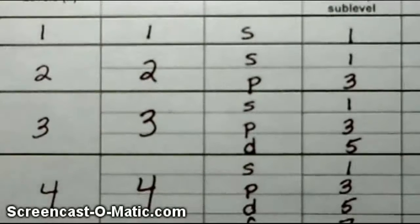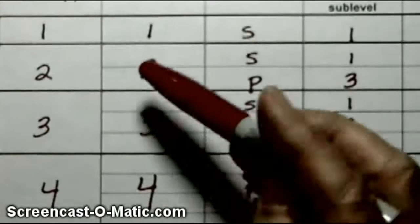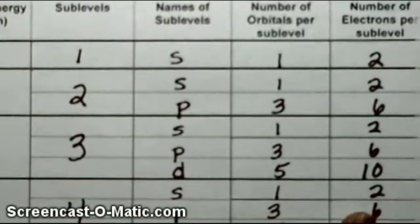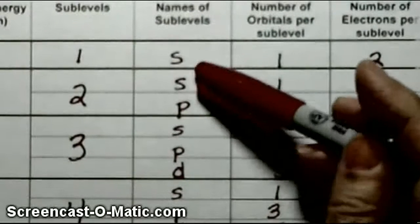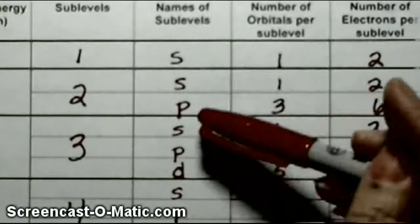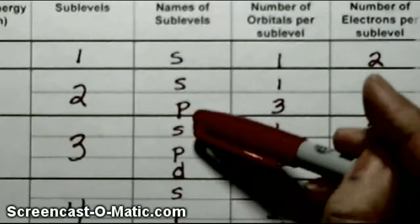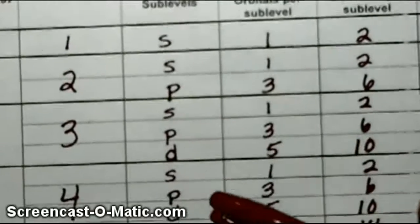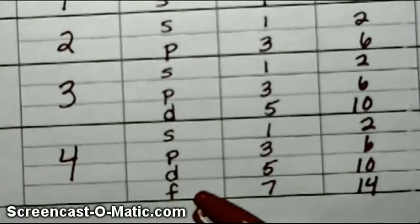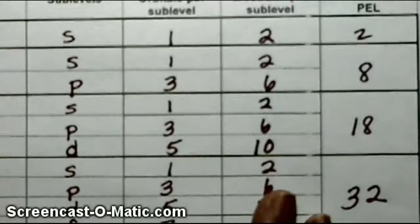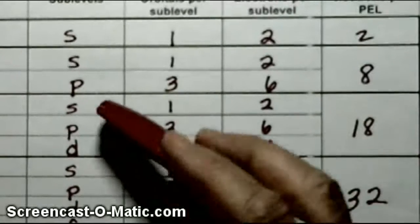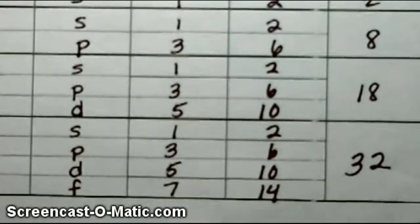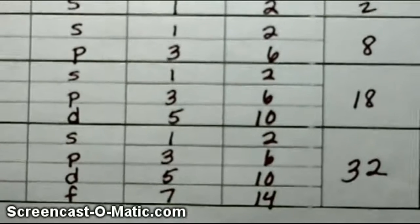In reality, the energy levels have sub-levels. The first energy level has one sub-level, the second has two, the third has three. These sub-levels have different shapes we can tell from their names: S's are spheres, P's are like two lobes together, D's are like four lobes together, and F's are like eight lobes together. It gets more complicated because they come in sets — P's in sets of three, D's in sets of five, and F's in sets of seven.